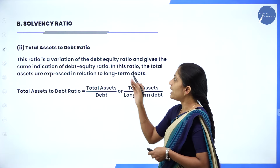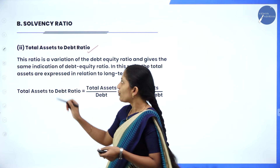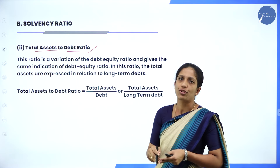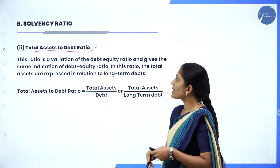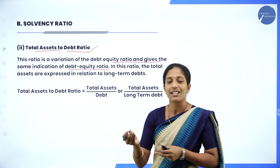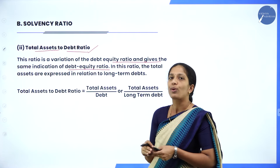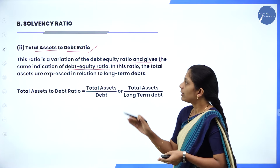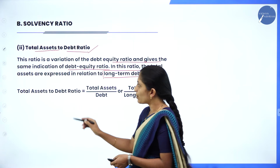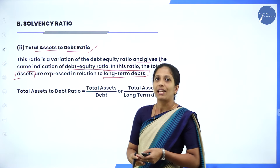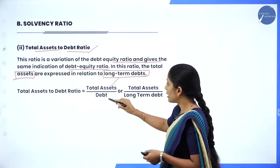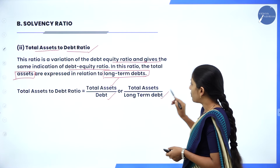The second type is total assets to debt ratio. Here we compare total assets of the firm with long term debt. This ratio is a variation of the debt equity ratio and gives the same indication. The formula is: Total assets to debt ratio = Total assets divided by long term debt.